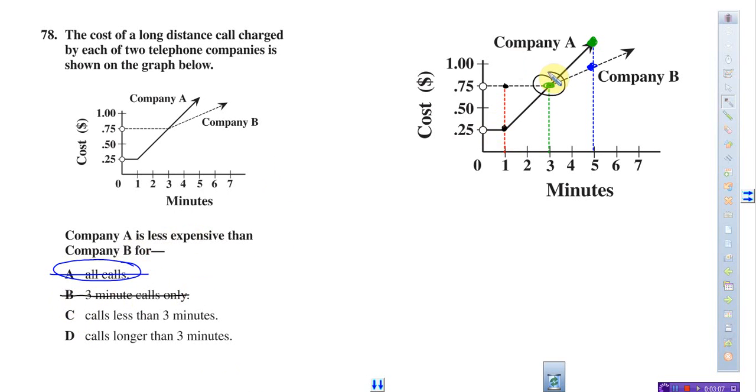We're looking for option A to be less expensive and Company B to be more expensive. Where is Company B more expensive? It's only in this little time frame. It has to be less than three minutes, because at less than three minutes, A is less than B. That's your answer.